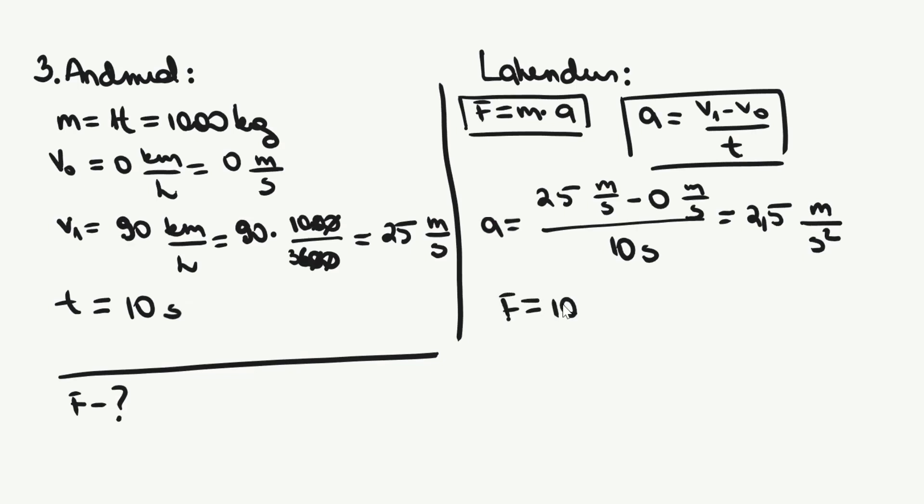Nüüd asendame andmed valemisse F võrdub M korda A ning arvutame lõppvastuse. Siin juures tuleb meeles pidada, et meeter sekund ruudus on sama, mis Newton kilogrammi kohta. Korrutamisel saame seega kilogrammi taandada ning järele jääb Newton. Kas said vastuseks, et jõud mida läks vaja autole sellise kiirenduse andmiseks oli 2500 Newtonit? Kui said, on ülesanne õigesti lahendatud ja Newtoni teine seadus selge.